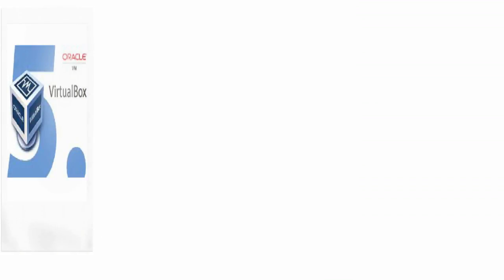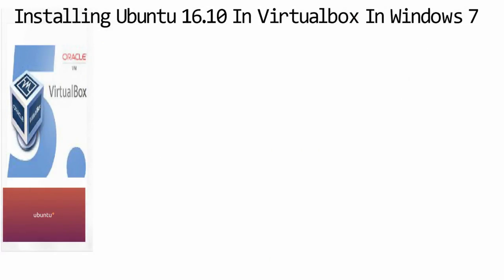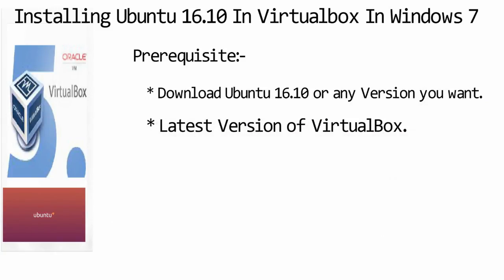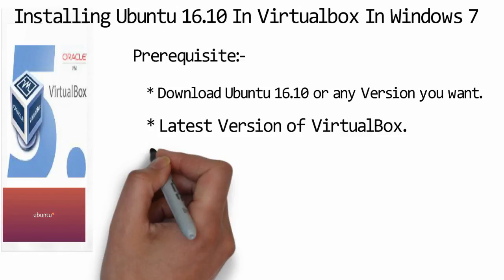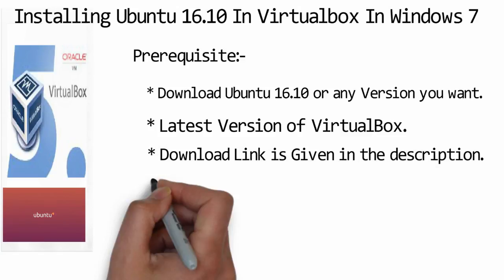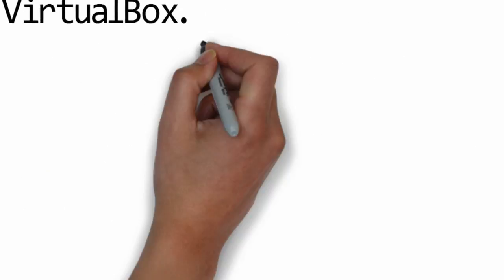Hey everyone, today I am going to show you how to install Ubuntu 16.10 in VirtualBox in Windows 7. First you need to download the Ubuntu 16.10 ISO and VirtualBox — the link is given in the description. First you must install VirtualBox, which is easy. Let's get started. Welcome to my channel, The Learner.